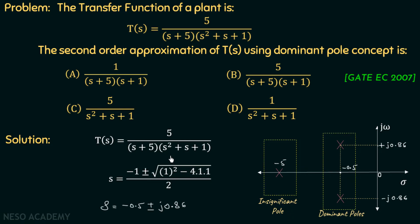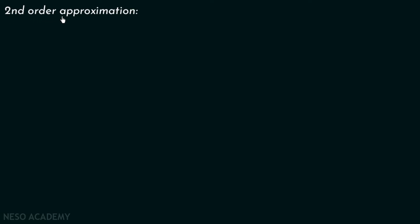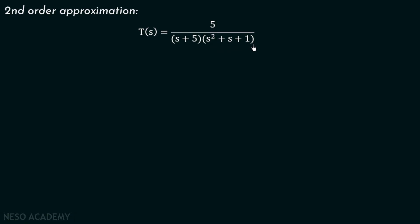We know that we can approximate this third-order transfer function to a second-order transfer function by eliminating the insignificant pole at s = −5. We will now perform the second-order approximation of T(s) = 5 / [(s + 5)(s² + s + 1)]. After eliminating the insignificant pole, this becomes a second-order transfer function.